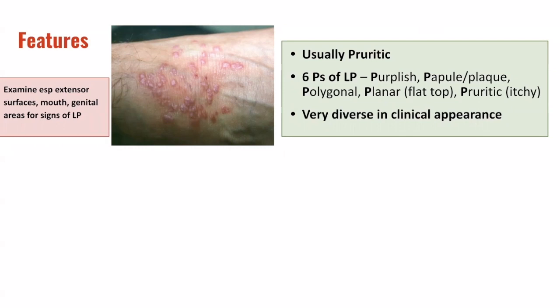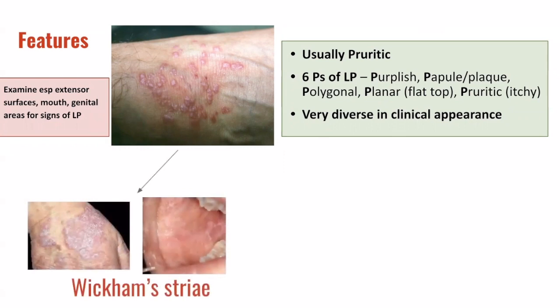You can see these features here on the image in the center. It's important to examine the extensor surfaces, the mouth, and the genital areas, as these are regions where lichen planus may often present. Lichen planus lesions may have a stringy reticulate white scale on the surface, which is known as Wickham striae.